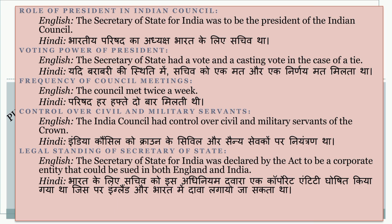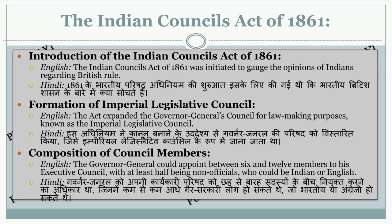The Indian Councils Act of 1861 was initiated to gauge the opinions of Indians regarding British rule. The Act expanded the Governor General's Council for law-making purposes, known as the Imperial Legislative Council. Is adhiniyam ne kanoon banane ke uddeshyon ke liye Governor General ki Parishat ka vistar kiya, jise Imperial Legislative Council kaha gaya.